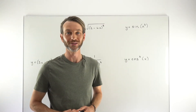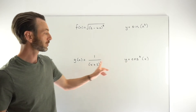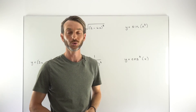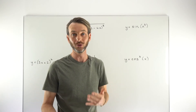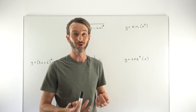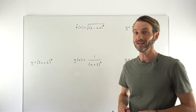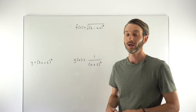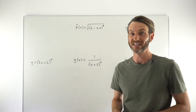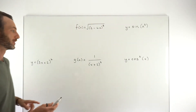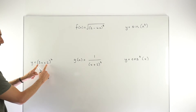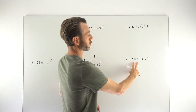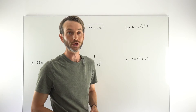The problem with composite functions is that they can manifest in a whole bunch of different forms. These are all examples of composite functions, but as you can see, they look very different from one another. So the challenge with the chain rule is not only knowing how to use the rule, but knowing the scenarios in which you can use it. The key is to look for what you think might be a composite function — a function inside a function. One common scenario would be something in a bracket with a power, or a trig function.